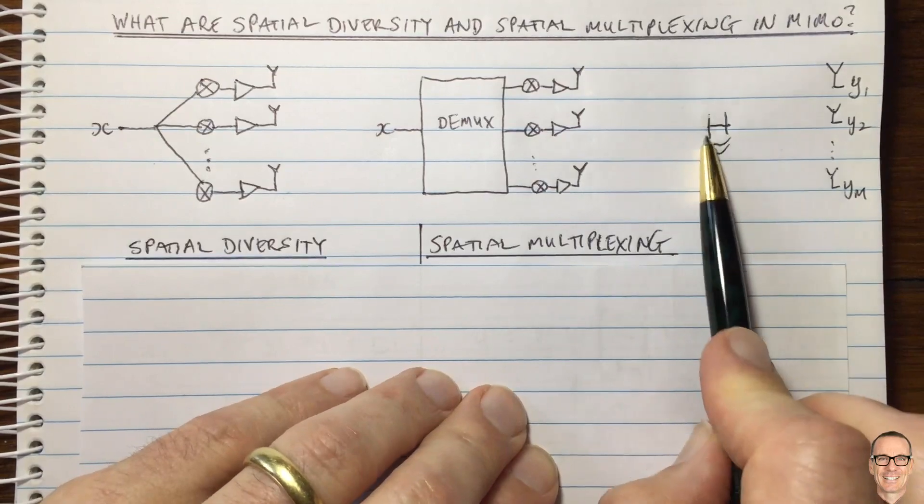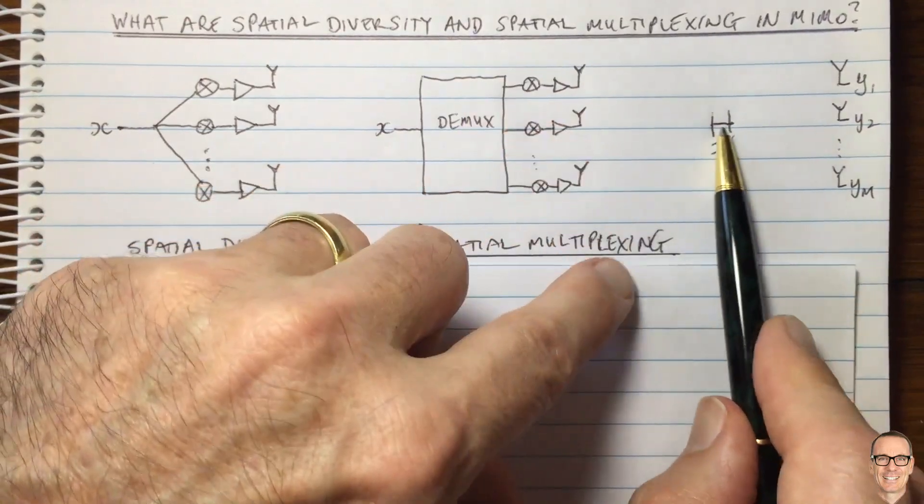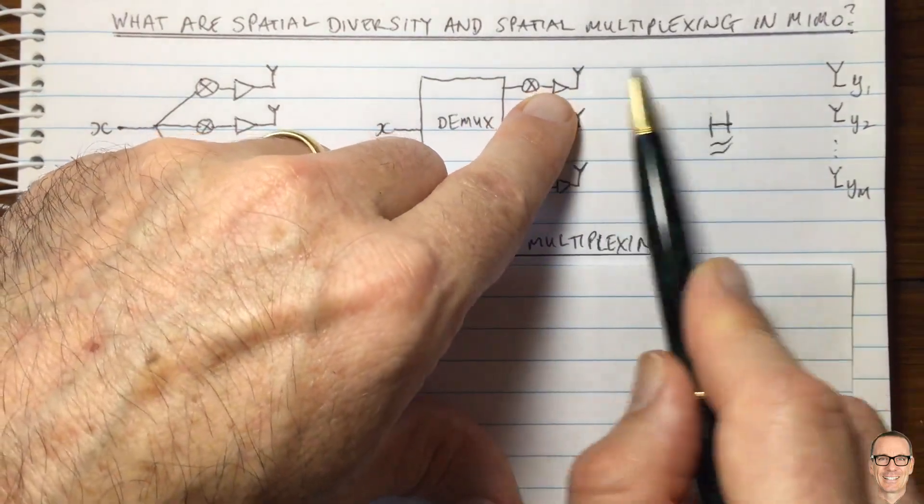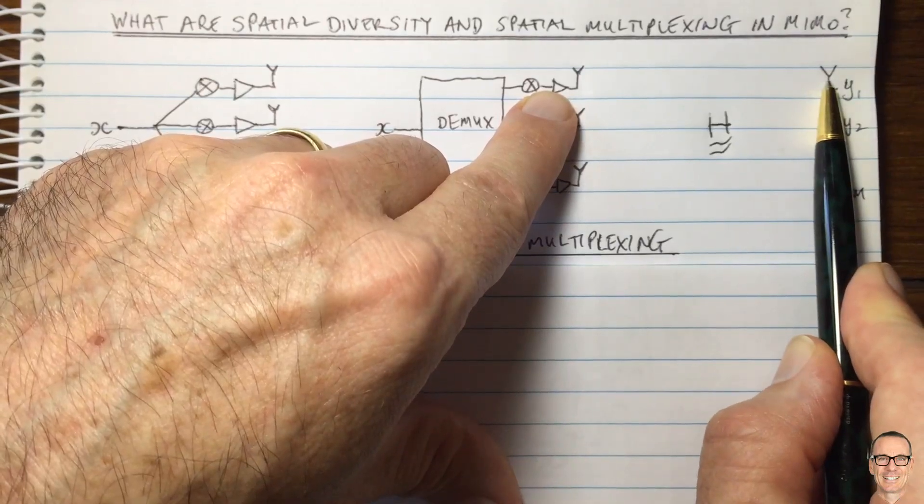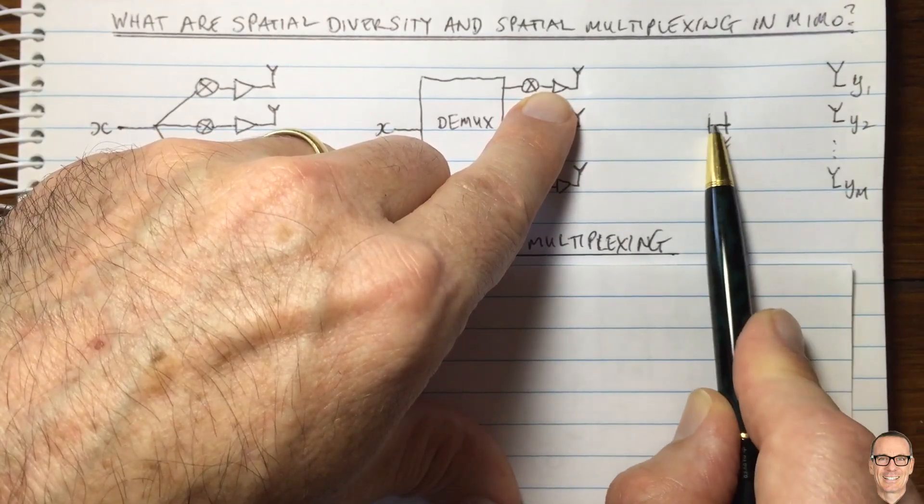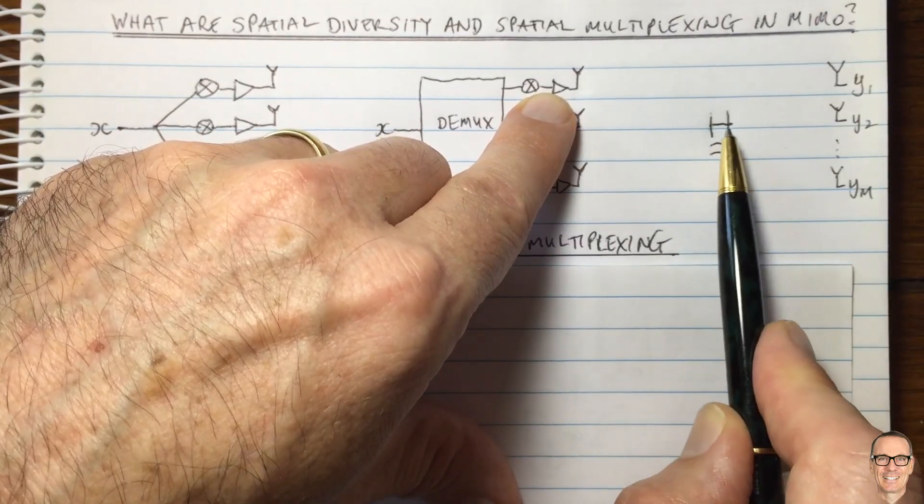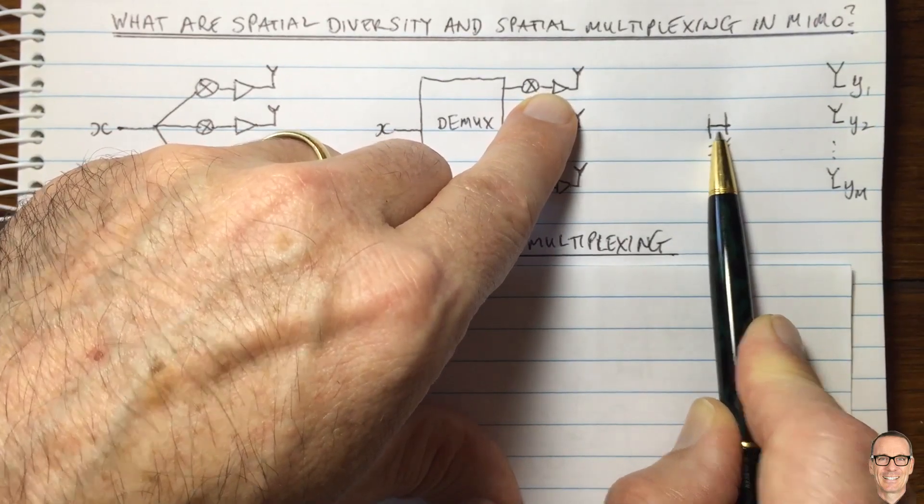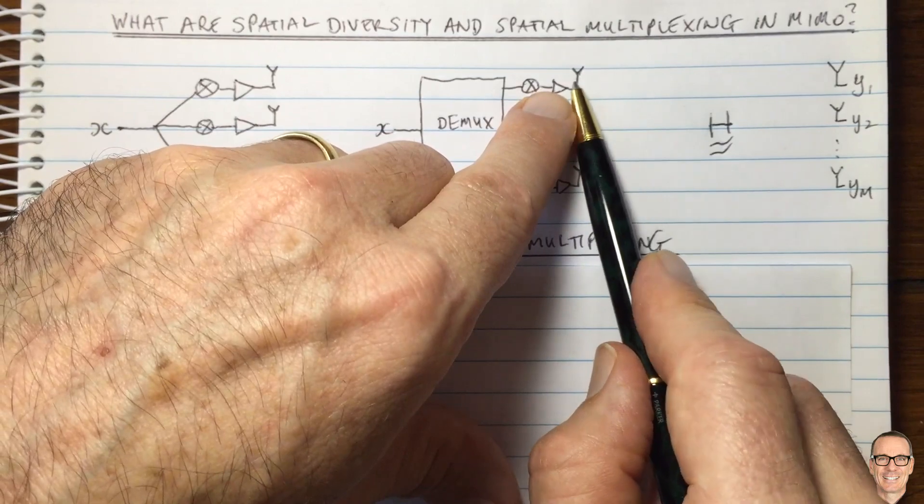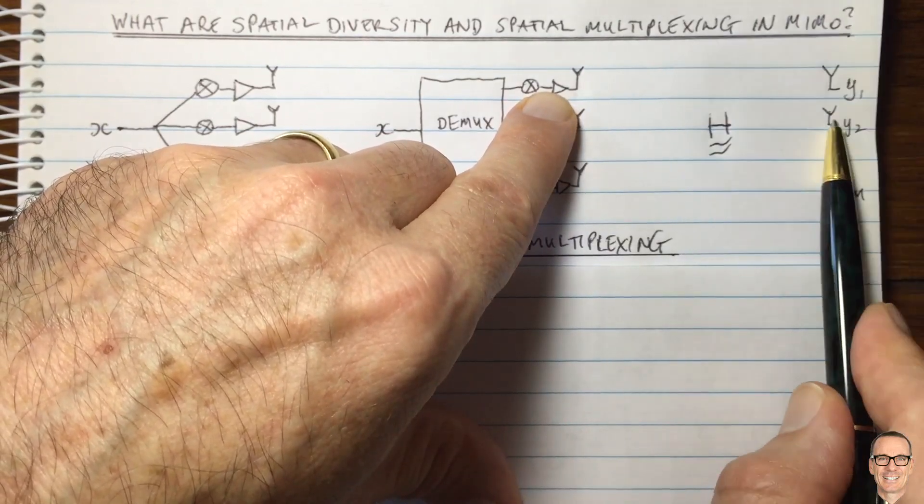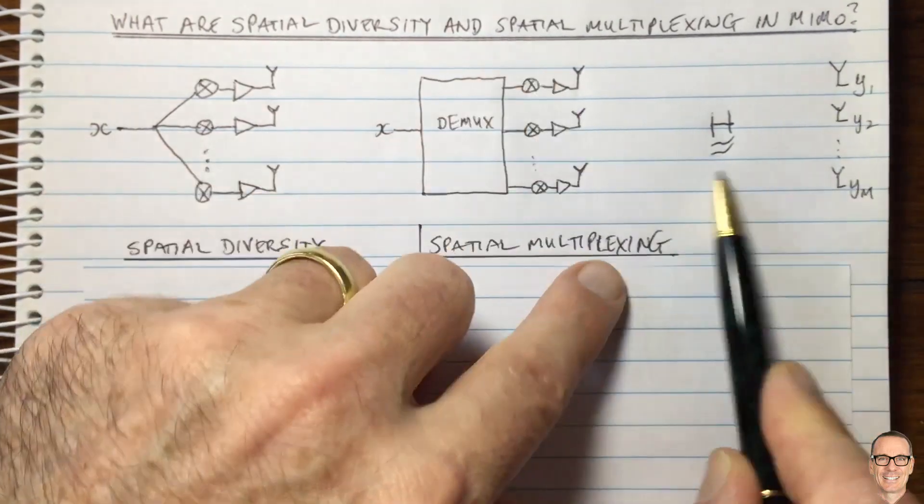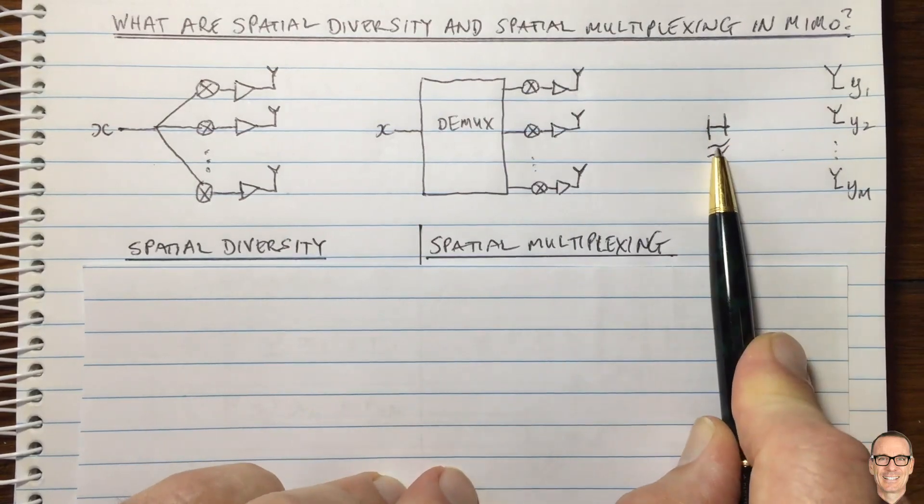And so we represent that by the matrix H. So the channel H is a matrix, and it has elements for each of the components between transmit and receive antenna element. So the 1-1 element of this matrix is from the first transmit to the first receive. The 1-2 element here is from the first antenna transmit to the second receive, and so on. This fills up the matrix H.